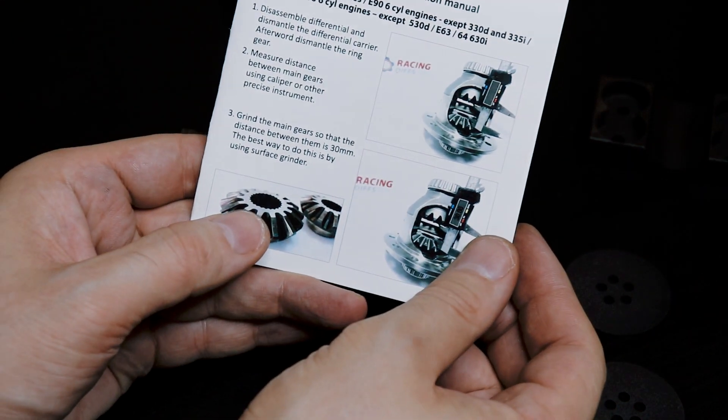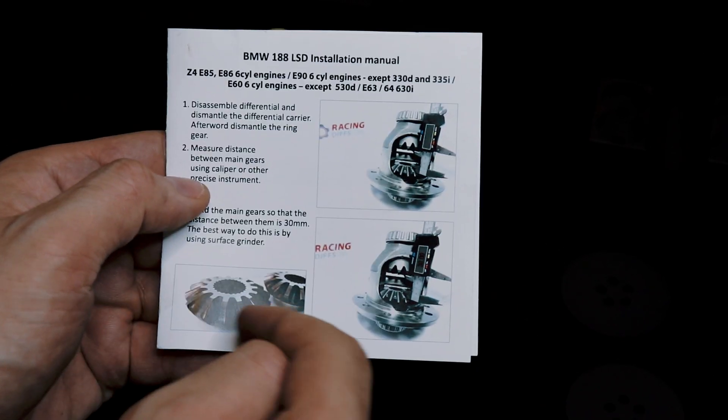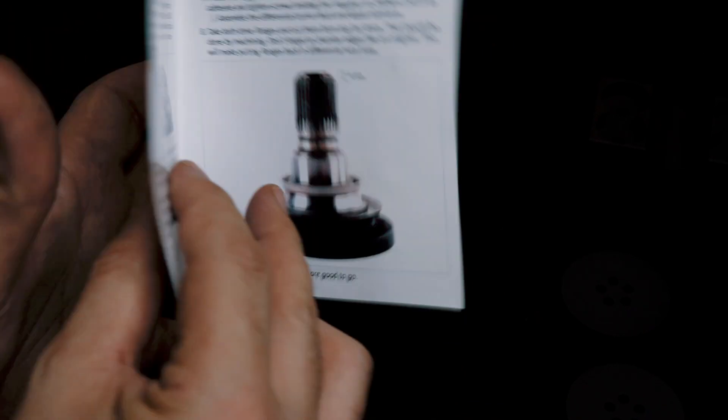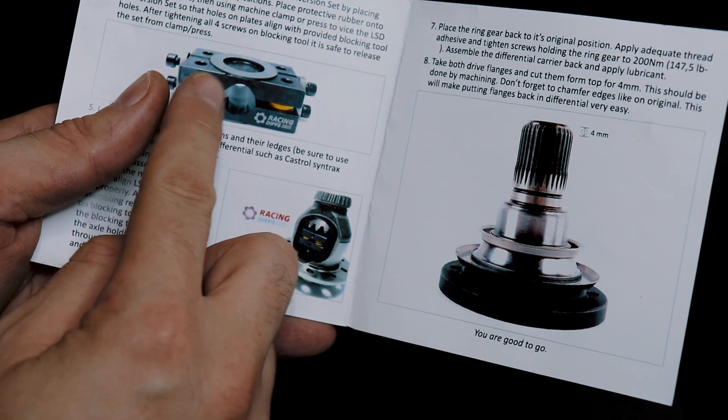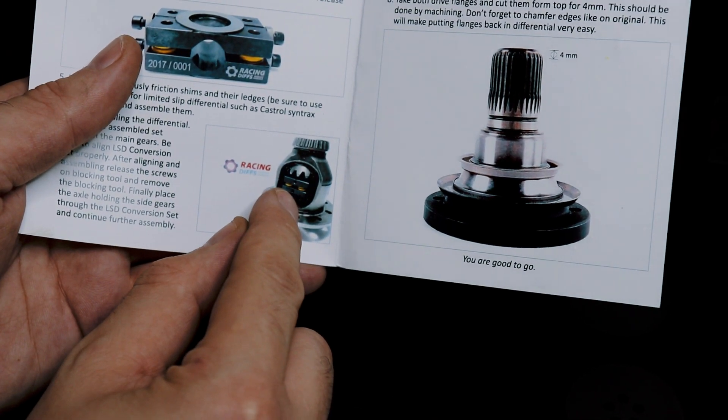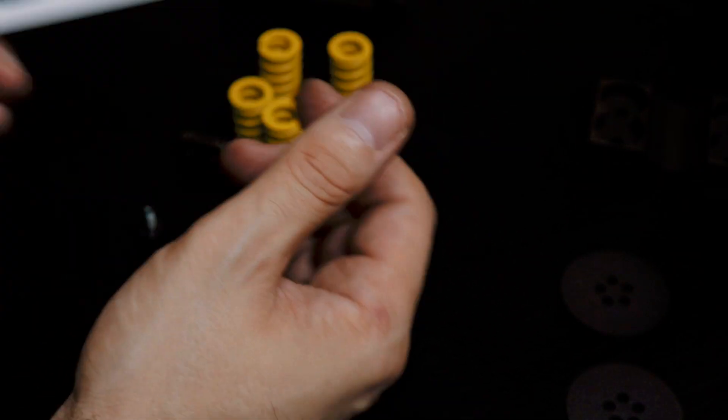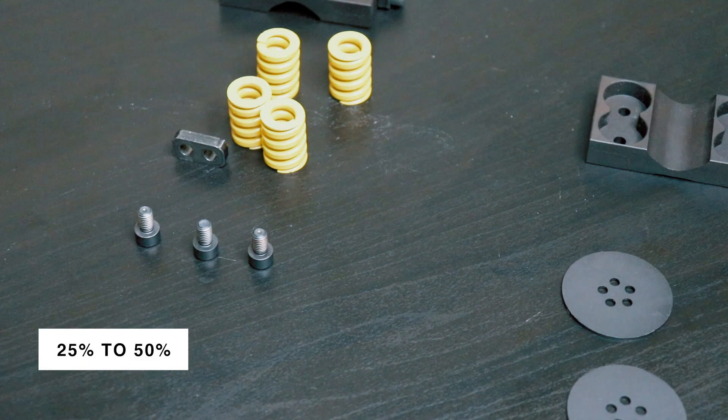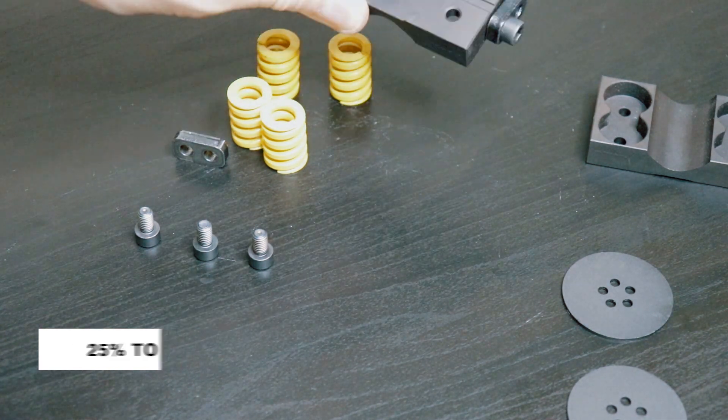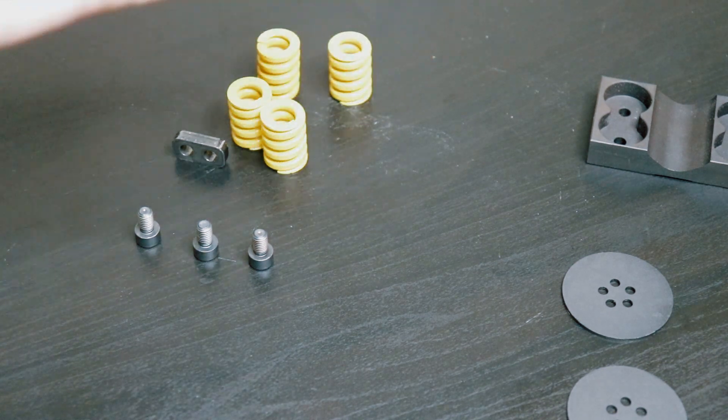If you look at the installation manual for this, it shows you what you got to do. When you're done, you're gonna end up with that piece inside your differential and it's gonna lock your spider gears to give you claimed 25% preload lockup and a progressive rate 50% total lockup from what I've been told.